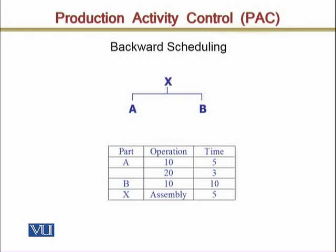Operation 10 for Part A takes 5 days to complete for 50 units. Operation 20 takes 3 days. So operation 10 is 4 days and operation 20 is 3 days for Part A.